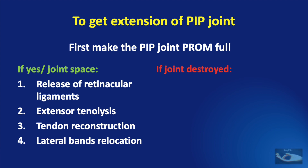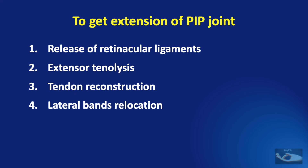If the proximal interphalangeal joint is totally destroyed, as seen by a stiff PIP joint with no joint space on x-ray, the above procedures will not be useful and it is better to do either an arthroplasty or an arthrodesis of the proximal interphalangeal joint. Let us now see the details of these four procedures: release of the retinacular ligaments, extensor tenolysis, tendon reconstruction, and lateral band relocation.